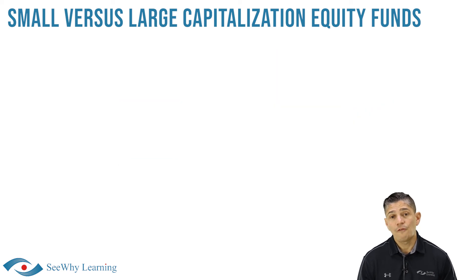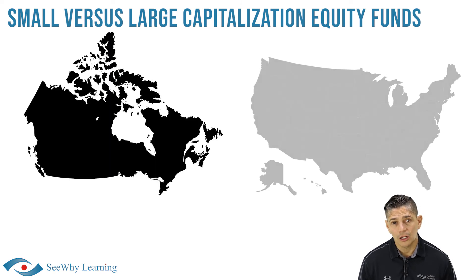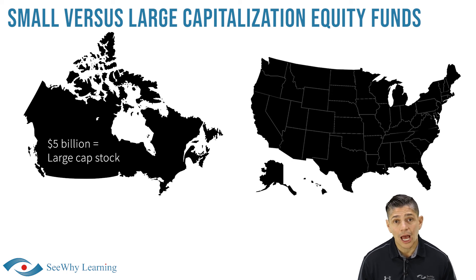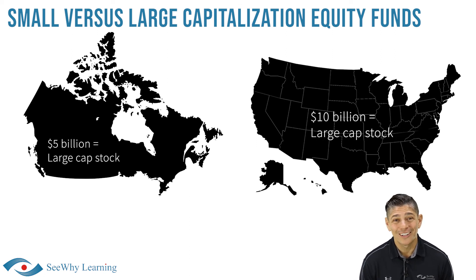What is considered a large cap stock can vary significantly from country to country. In Canada, $5 billion is considered a large cap stock, whereas in the US, that descriptor is reserved for companies that have a market capitalization of $10 billion or more.